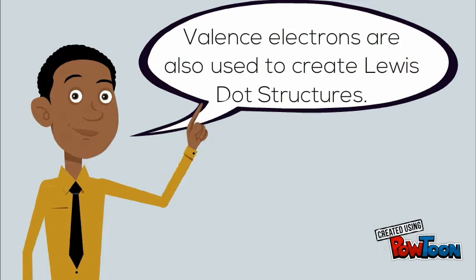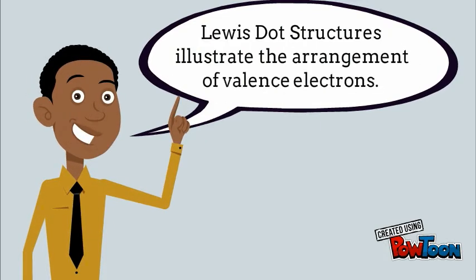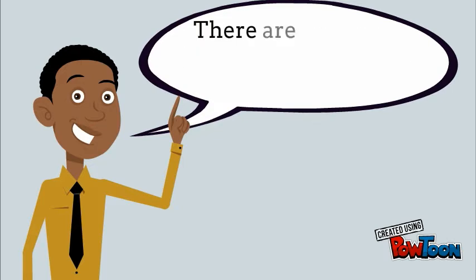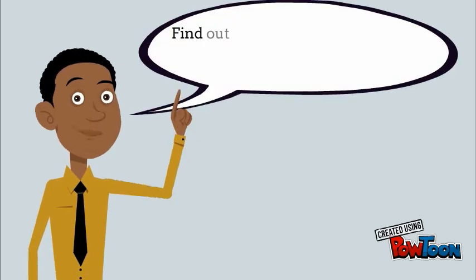Lewis dot structures are just illustrations that tell us the arrangement of the valence electrons for an atom. And there are three steps to writing and drawing a correct Lewis structure.